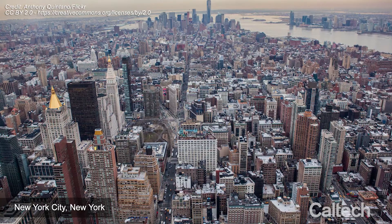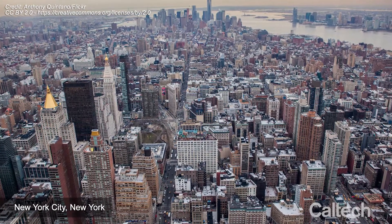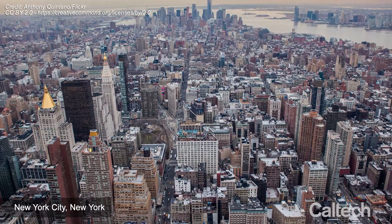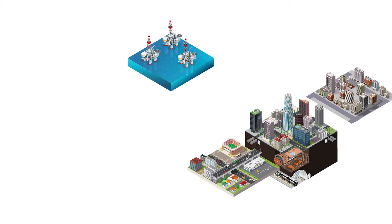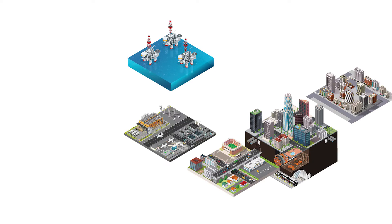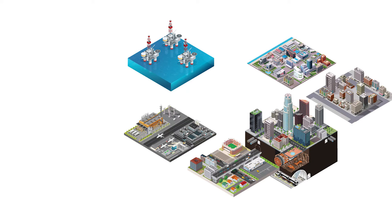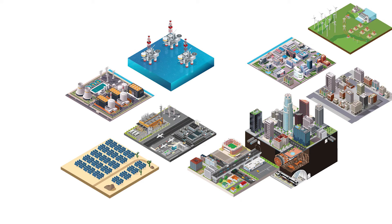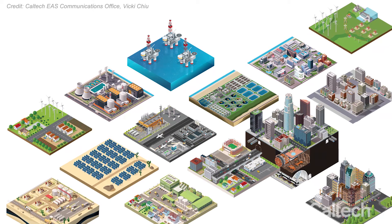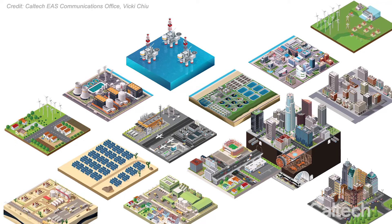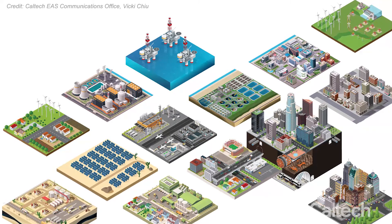Healthy megacities depend on a healthy performance of a variety of systems that range from infrastructure systems — pipelines, roads, bridges, tunnels, telecommunications, the internet, electricity, sewage, and so on and so forth. Those systems are not independently operating.